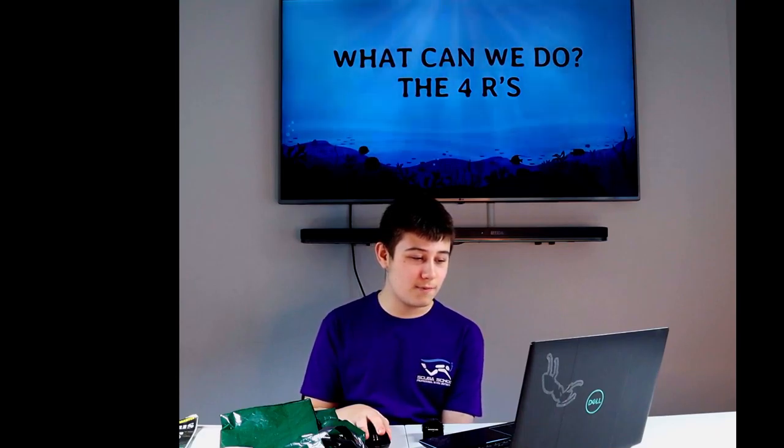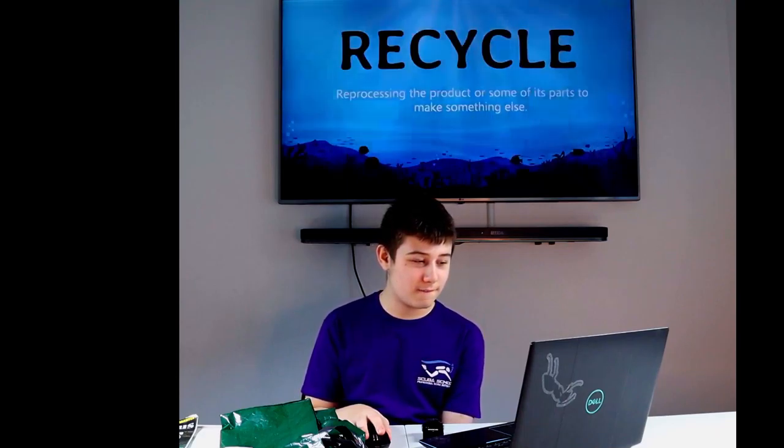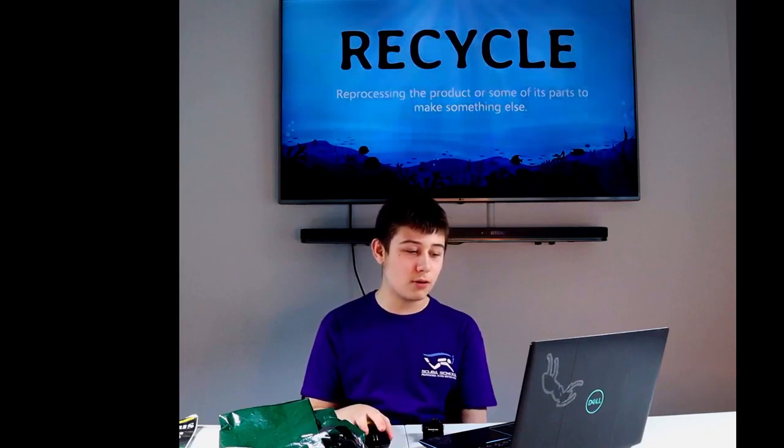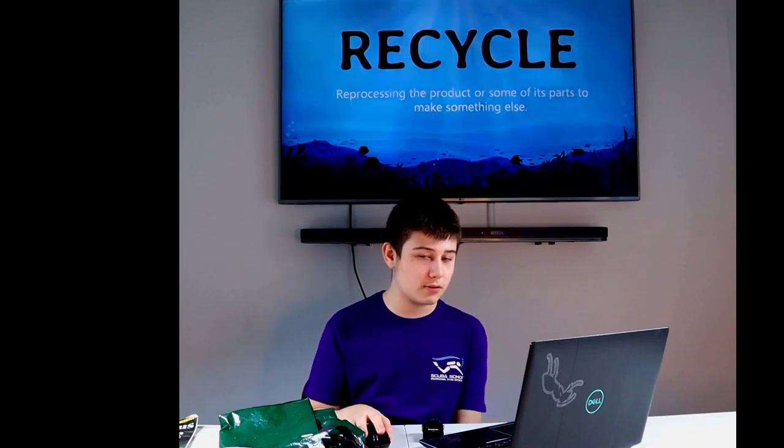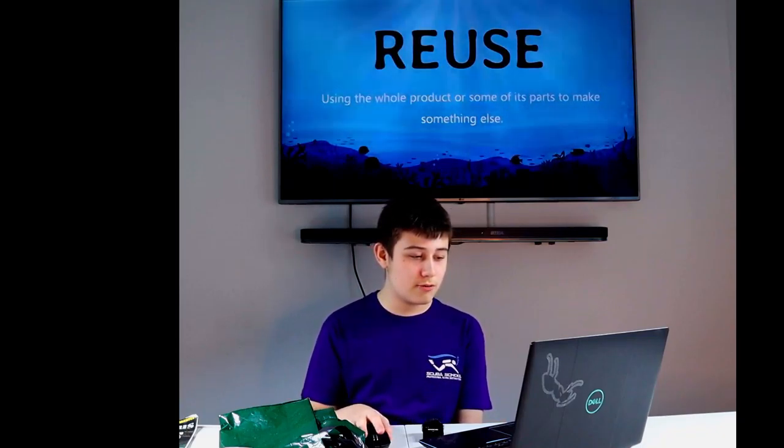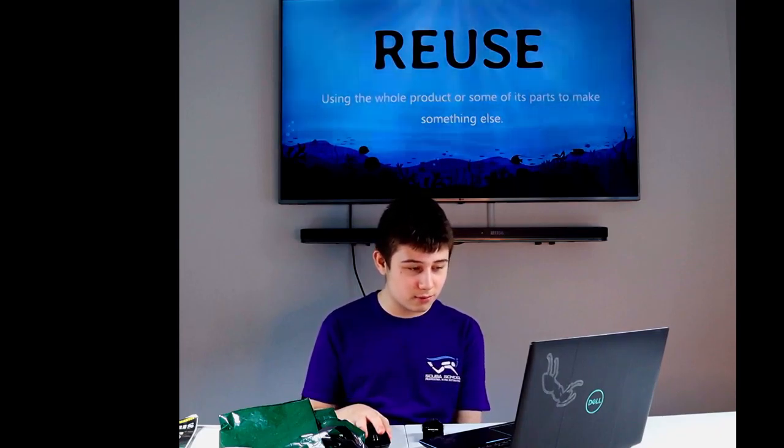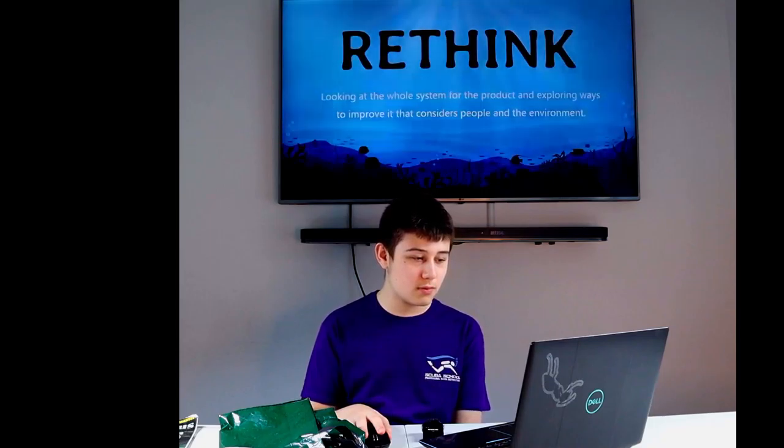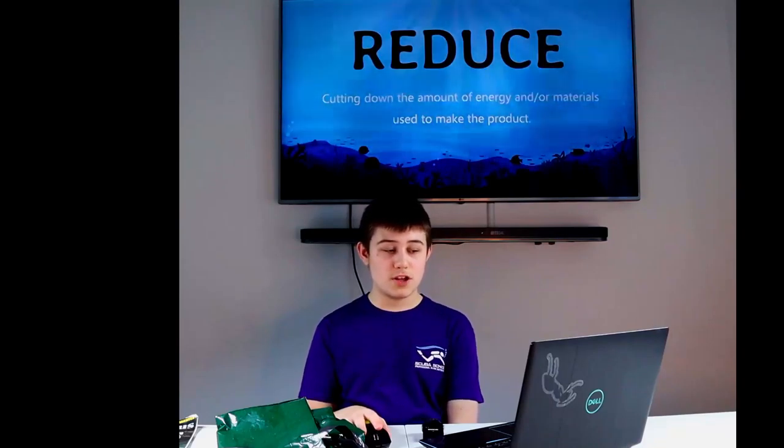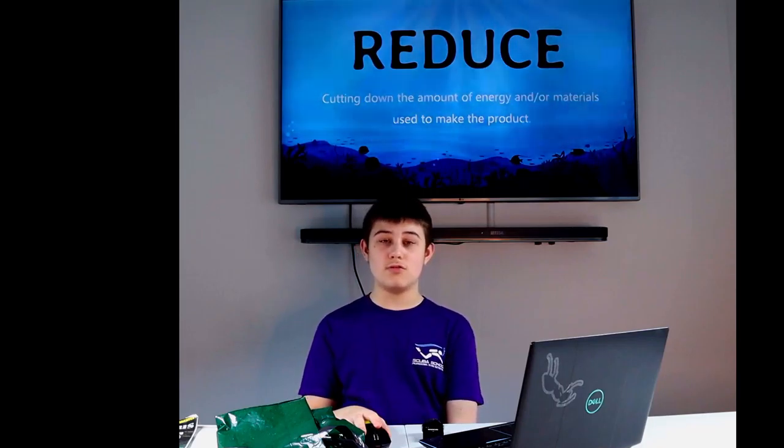What can we do? Recycle: Reprocessing the product or some of its parts to make something else. Rethink: Look at the whole system for the product and explore ways to improve and consider people and the environment. Reduce: Cut down the amount of energy and/or materials used to make the product.